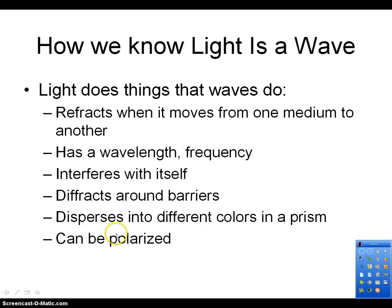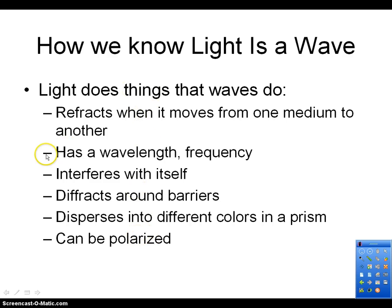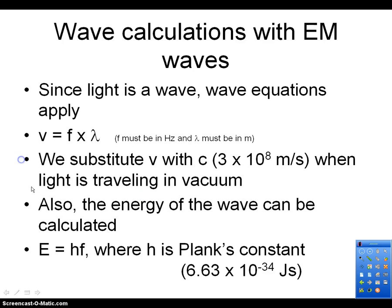The last thing is that light can be polarized — something we learned about previously — and you couldn't do that with a particle. So these are all the things that let us know that light behaves as a wave.